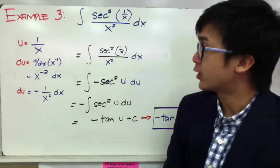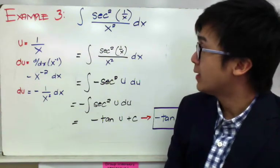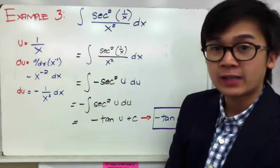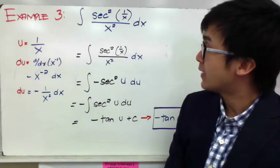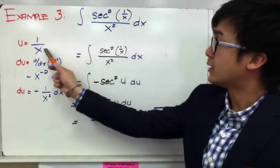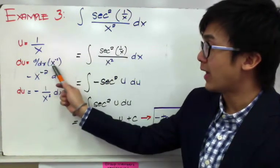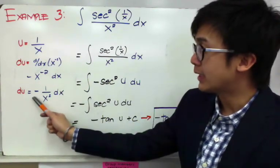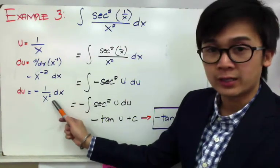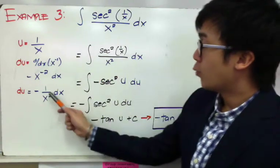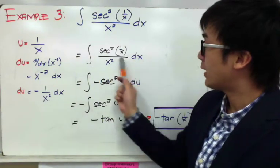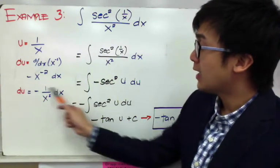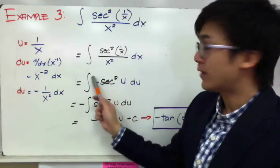In our third example, we're working with a trigonometric function. We need to find the integral of secant squared of (1 over x), all over x squared dx. We set u equal to 1 over x. The derivative of 1 over x is the same as the derivative of x to the negative one, which gives us negative x to the negative two dx. So du equals negative 1 over x squared dx, and the term 1 over x squared dx appears in our original function, so we can replace it with negative du.